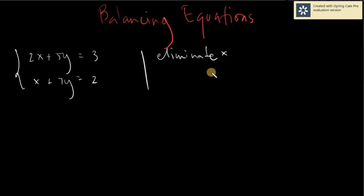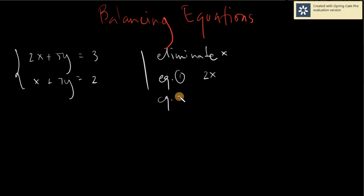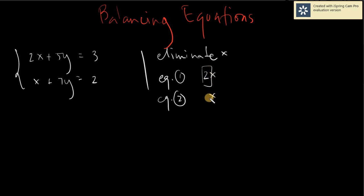If the x's must be the same, you must check the values of x. In the first equation, the x is 2x. In equation 2, the x is simply x. How do we make equation 2's x the same as equation 1's? You check the numerical coefficient. In this case, the numerical coefficient is 2. So you want this to have a numerical coefficient of 2, and for you to have that, you need to multiply this by 2 so that you will have 2x. So they are now balanced.